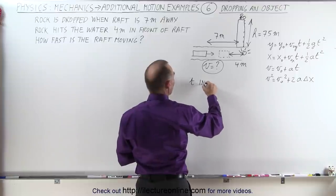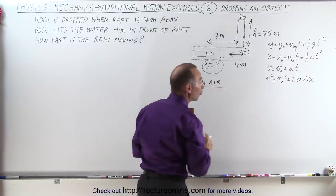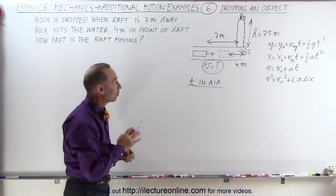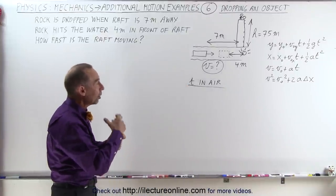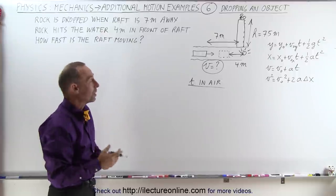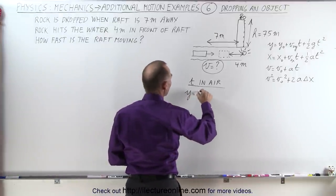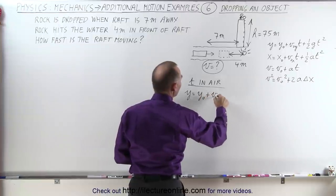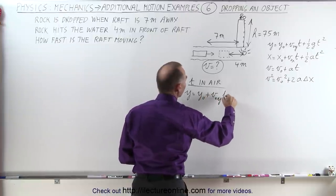We call that time in the air, and that is typical for a lot of projectile motion problems where we need to find out how long the projectile is actually moving. We use the equation y = y₀ + v₀y·t + ½gt².